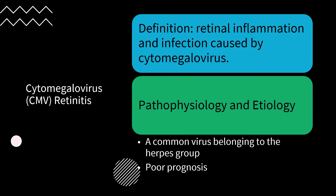CMV is a double-stranded DNA virus and a member of the herpesviruses. After recovery from initial infection, CMV remains dormant within the host, and viral reactivation occurs during compromise of the immune system with immunosuppression.